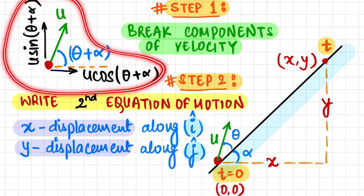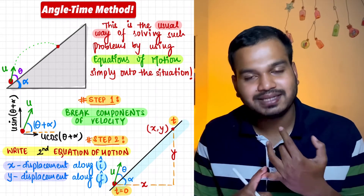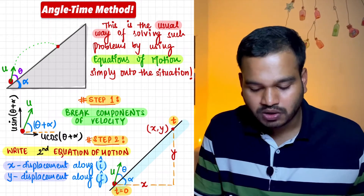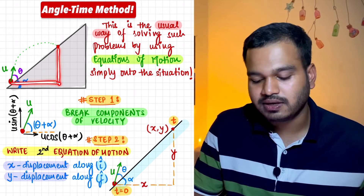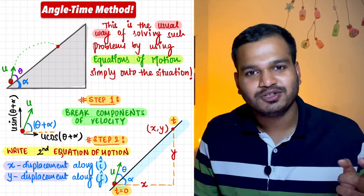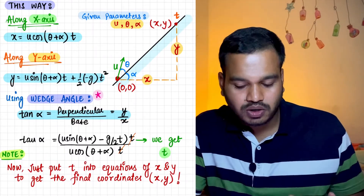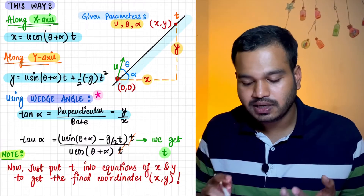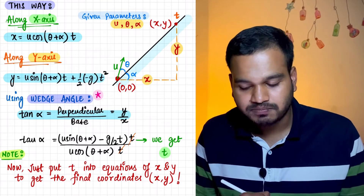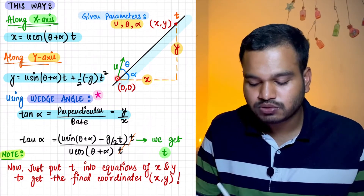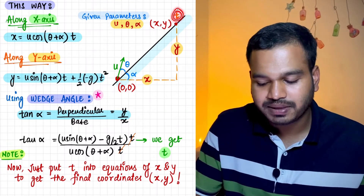We take the linear sequence method — x in one direction and y in the other direction. In time t, the object will have traveled some x in the x-direction and some y in the y-direction. So we call those y and x respectively, and from those we get their equations. Then there is a twist which we will apply. So, u, theta, and alpha parameters are given — initial velocity of projection is known, wedge angle alpha is known, and the angle theta made from the inclined plane is known. We need to find the x, y coordinates where it finally hits, and the time of flight.